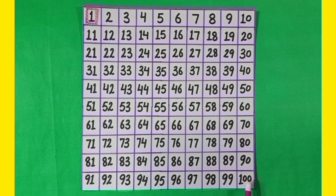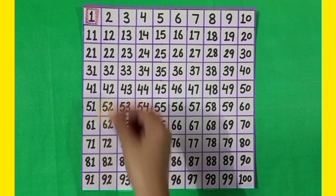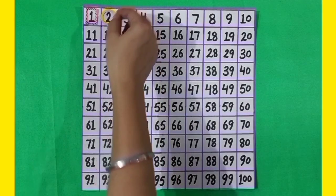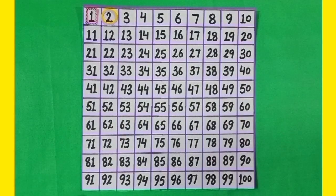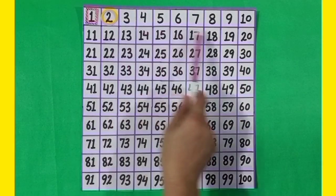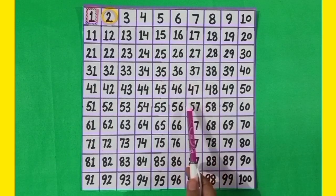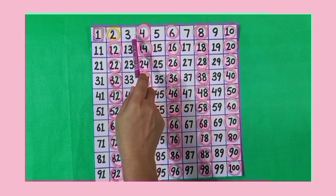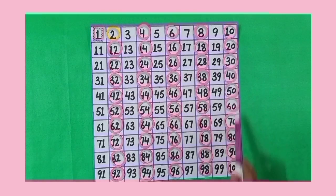Students, we will now find out prime and composite numbers between 1 to 100. First of all, we will encircle 2 with yellow color, and we will find out all the multiples of 2 with the help of jump by 2. We have encircled all the multiples of 2 with pink color.